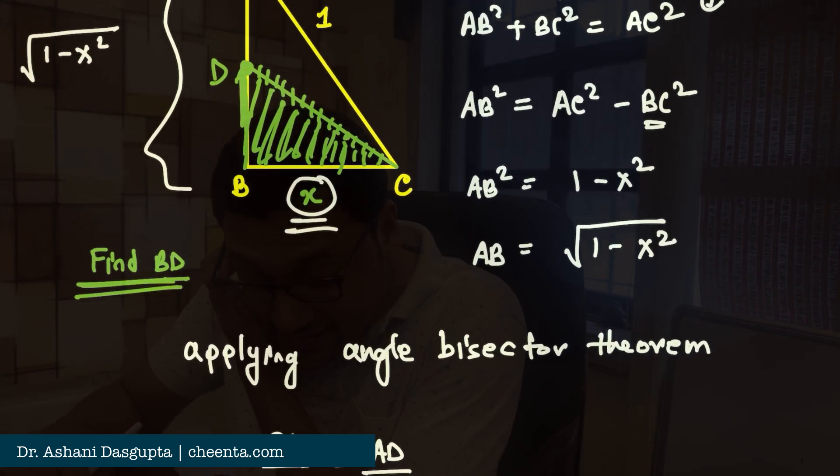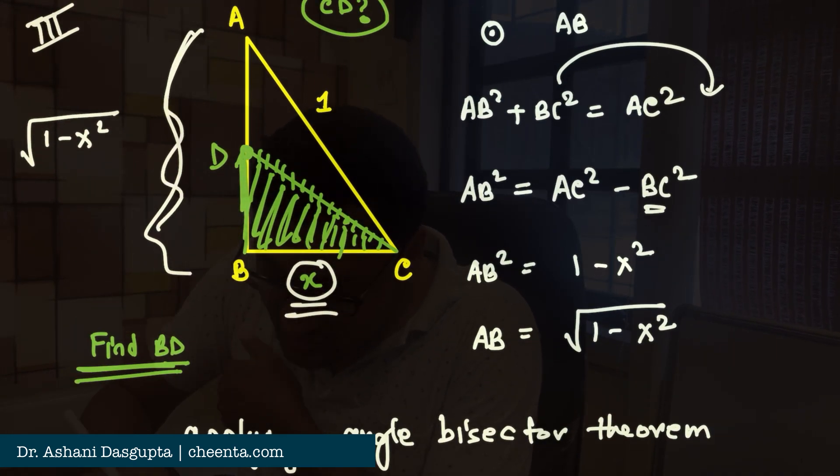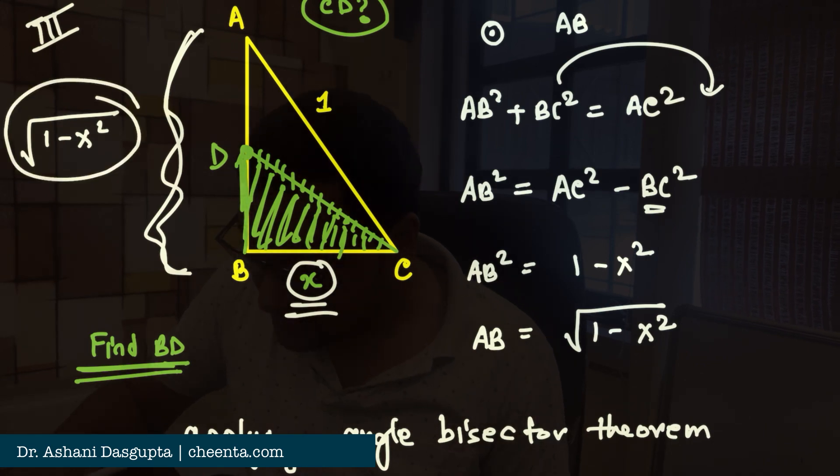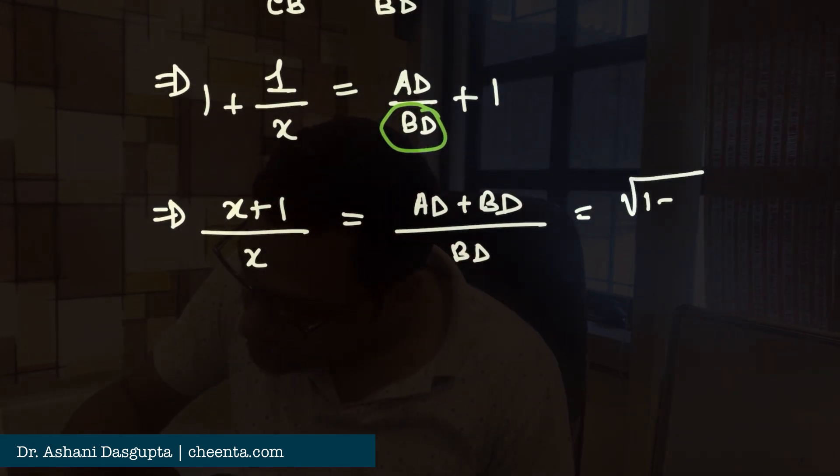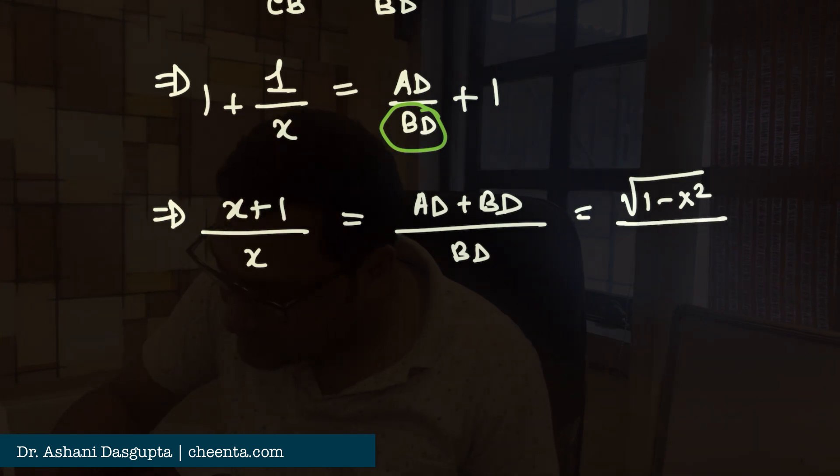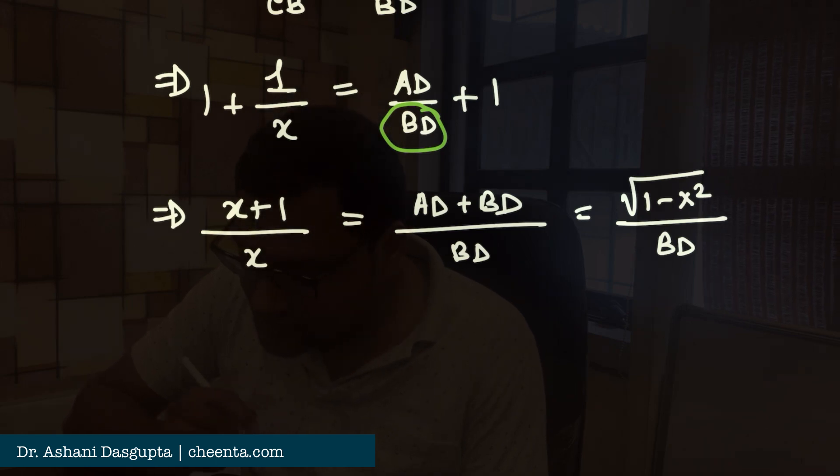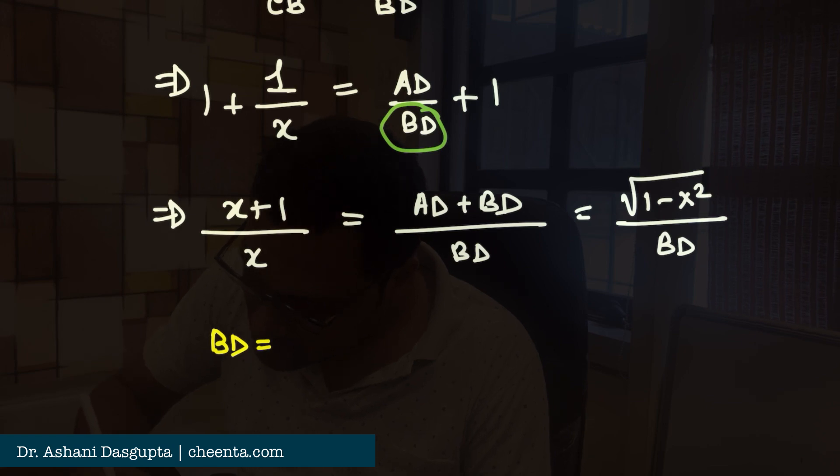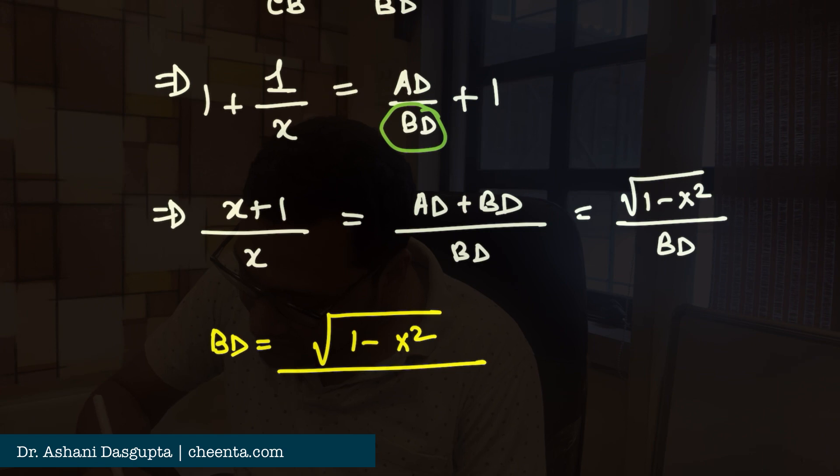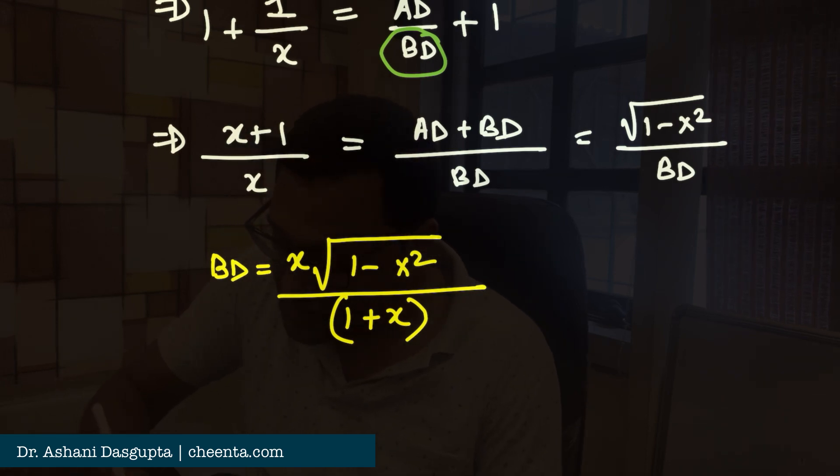So, we have (X + 1)/X = (AD + BD)/BD. But AD + BD is simply AB whose length we know: square root of 1 - X². Square root of 1 - X² divided by BD is what we want. So, we are almost done. We have to find out BD. So, BD is equal to square root of 1 - X² times X divided by 1 + X. So, that's the length - so I just cross-multiplied stuff. That's all.